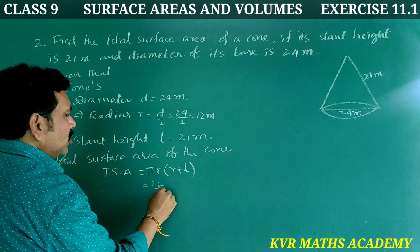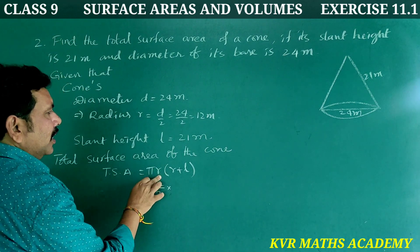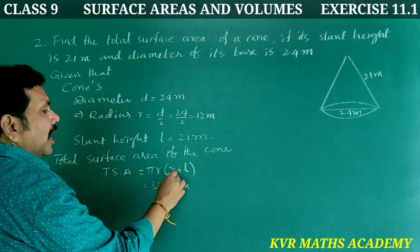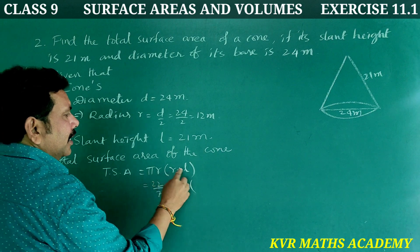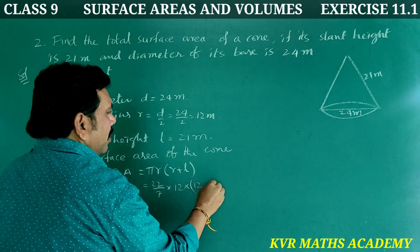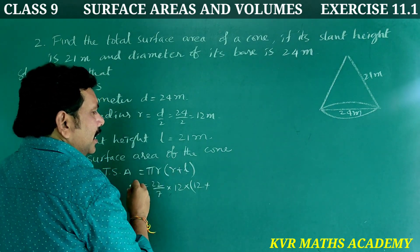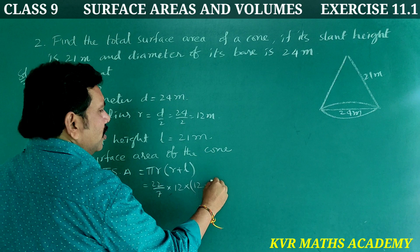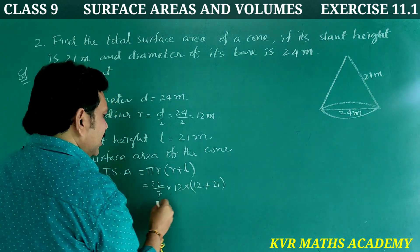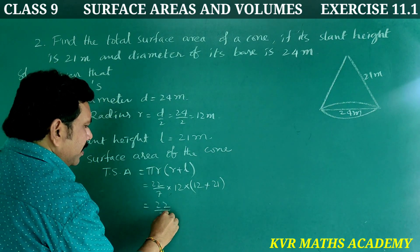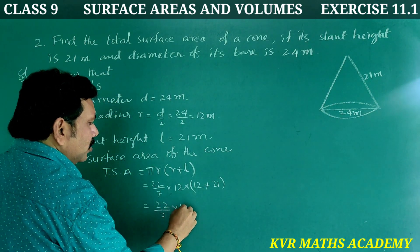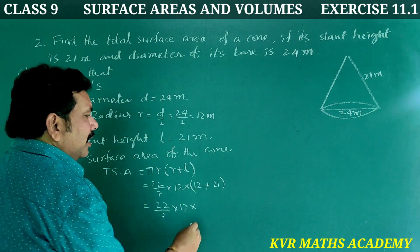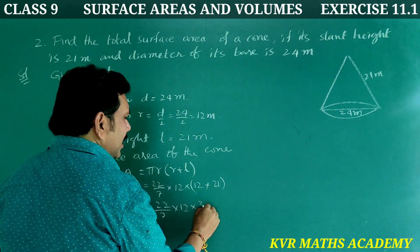So TSA equals 22 by 7, into 12, into 33. Simplifying: 22 by 7 into 12 into 33. We get 22 into 12 into 33 divided by 7. Calculating: 12 into 33 is 396, and 396 into 22 divided by 7.